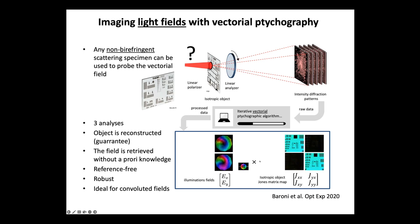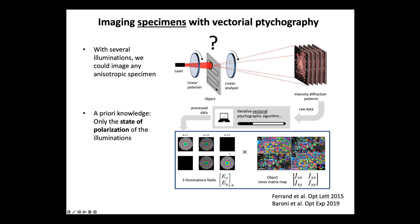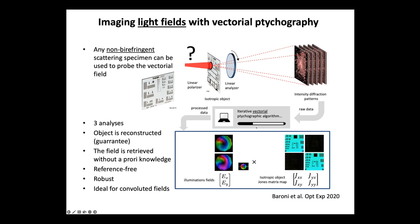Comparing with before: previously I retrieved an object and three illuminations. Here, what I retrieve is the object — and it is important to check that I retrieve the appropriate object I knew before, as a guarantee that the illumination field I get is correct. The illumination field is a Jones vector — a map of Jones vectors — with these two components Ex and Ey, each represented with this color code.